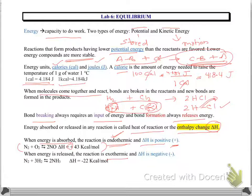On the other hand, if more energy is released when bonds are formed compared to the energy required to break the bonds, the net change is that energy is released. These reactions are known as exothermic, and delta H is negative. So if you see a negative sign for delta H, you say the reaction is exothermic.